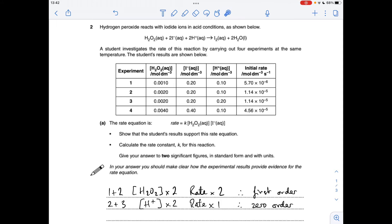And if the rate's gone up another two times from a doubling of I-, that's also going to be first order. So I've just said from 2 and 4, both the H2O2 and I- concentrations have doubled. The rate's gone up four times, so they both must be first order.